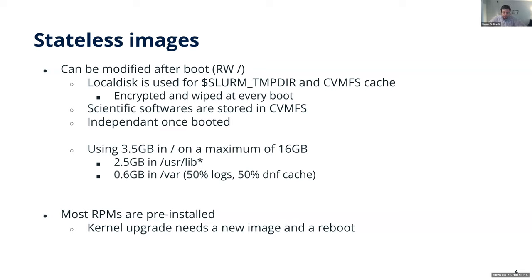When we build the image with XCAT, we have a list of packages we want. After boot, Puppet runs and most software is already there — it just configures things like the syslog server, taking maybe 30 seconds to a minute. The only time we need to reboot compute nodes is for kernel upgrades. When we do that, we use the Slurm reboot command, which prevents jobs from running on both old and new image versions, ensuring all new jobs go to the new image when complete.